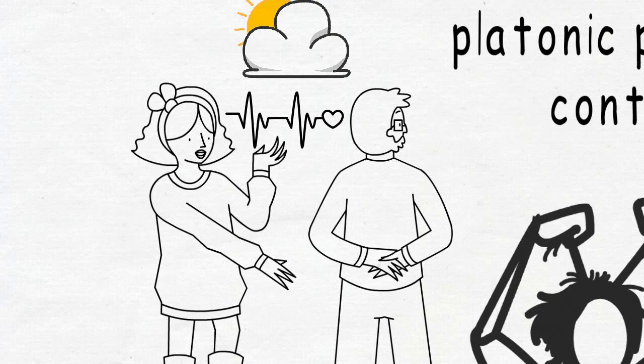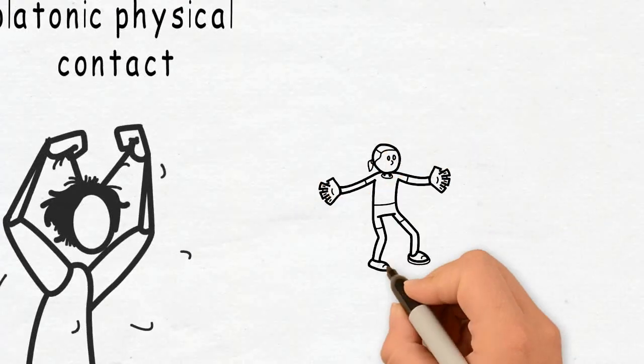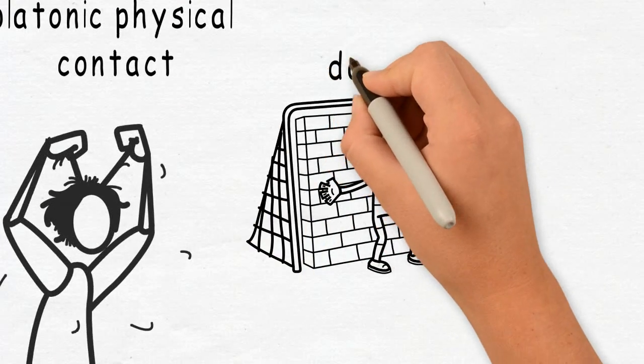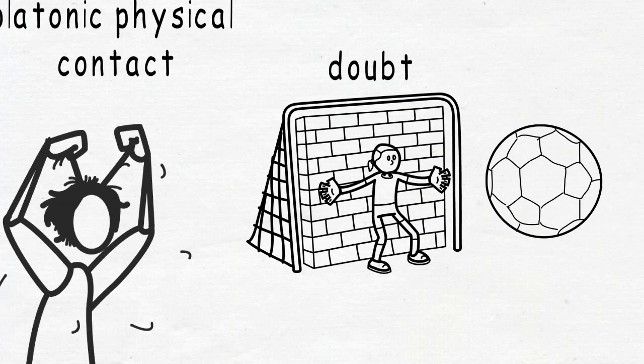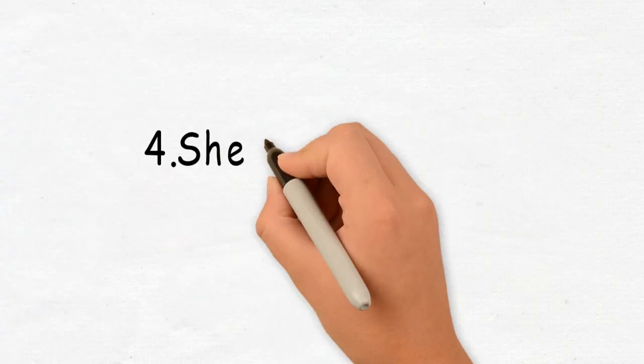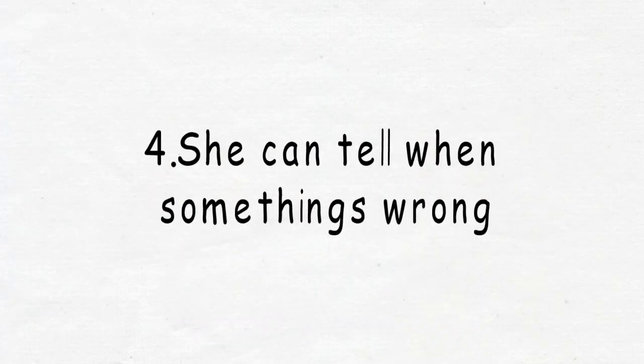It's this sort of emotional connection that breaks down barriers of doubt, assuring you that, dude, she feels a deep attraction to you. Number four. She can tell when something's wrong.